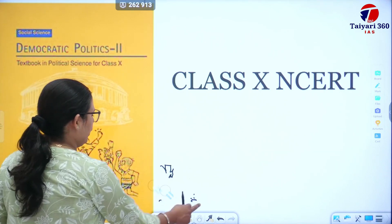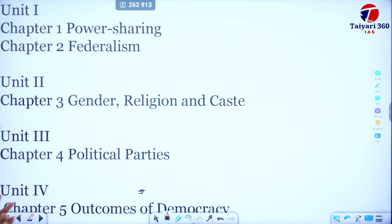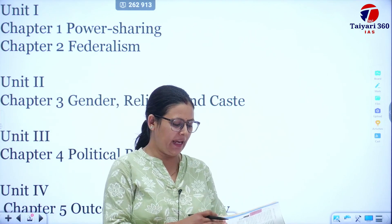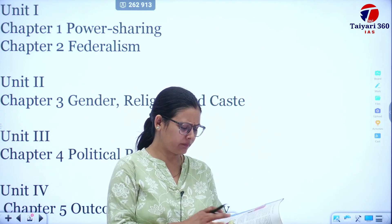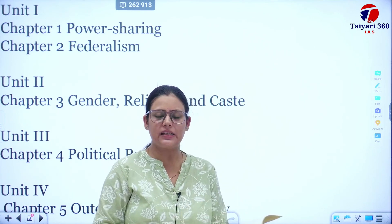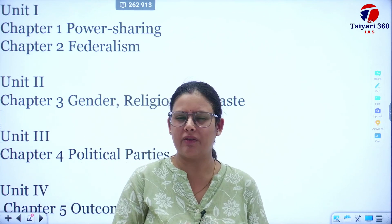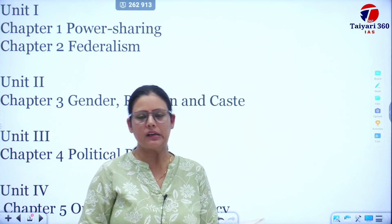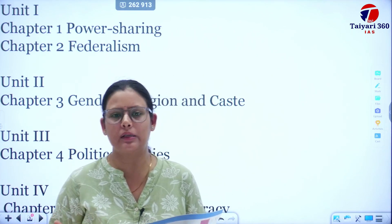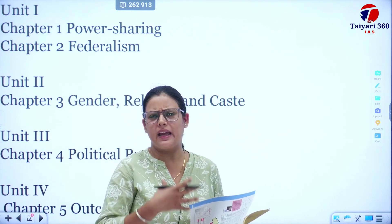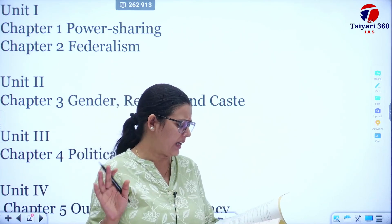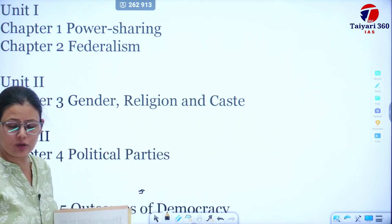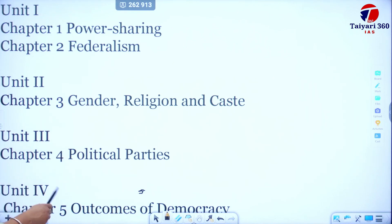The new edition of class 10 NCRT has five chapters, while the older edition had eight chapters. The extra chapters are not so important because they contain stories about neighboring and other countries. For example, one chapter is about power struggles and movements in countries that struggled for independence or to establish democracy. There is also a chapter on challenges to democracy which is not in the new edition, and we will add it with chapter five.